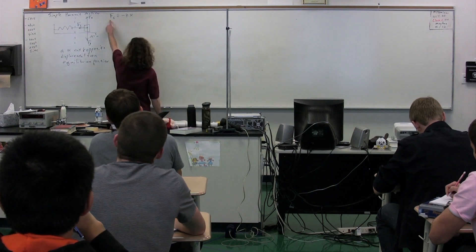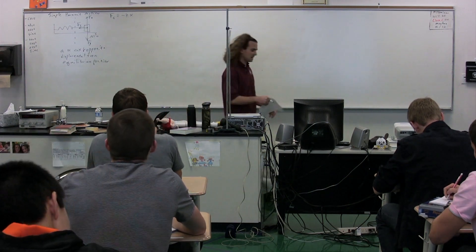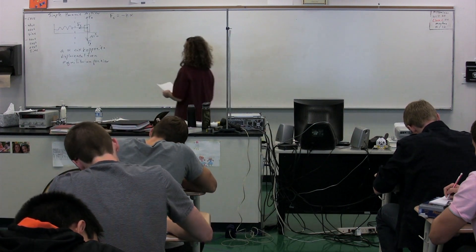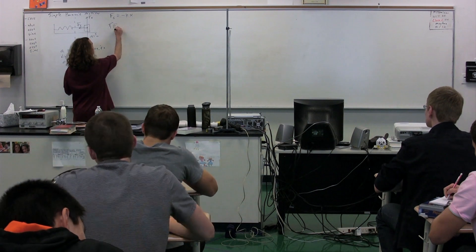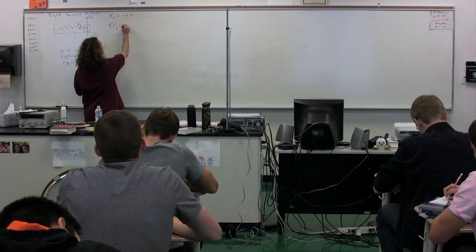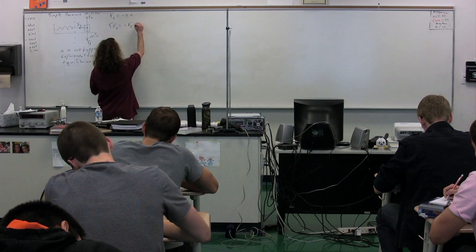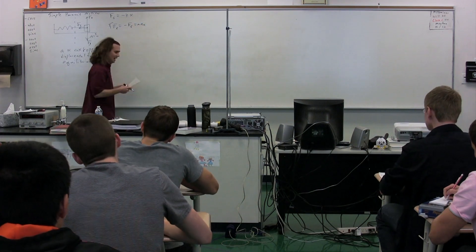The spring constant is newtons per meter — if you solve for k, you get the force of the spring divided by x, which gives newtons per meter. If we look at this and sum the forces in the x direction — again, there is no friction — we get the negative of the force due to the spring equals mass times acceleration in the x direction.